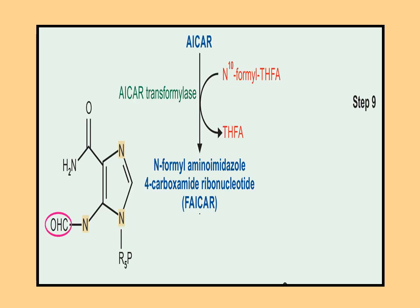Step nine: from aminoimidazole carboxamide ribonucleotide, AICAR, in the presence of AICAR transformylase, the second one-carbon transfer reaction occurs. N10-formyl tetrahydrofolic acid is converted to tetrahydrofolic acid, contributing carbon C2 of the purine ring. The product formed is formylaminoimidazole carboxamide ribonucleotide, FAICAR.